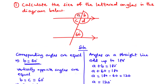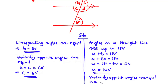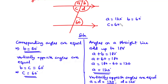Since A and D are vertically opposite angles, and vertically opposite angles are equal, A equals D equals 120 degrees. In summary: A is 120 degrees, B is 60 degrees, C is 60 degrees, and D is 120 degrees.